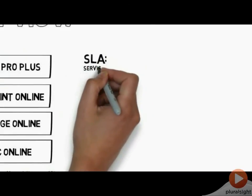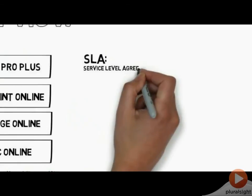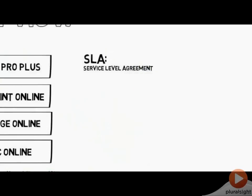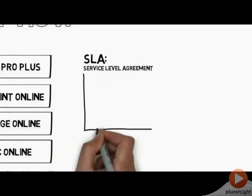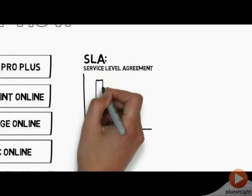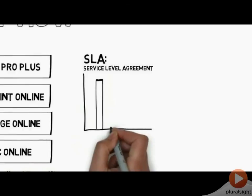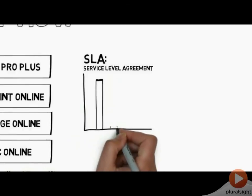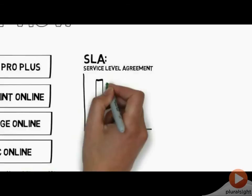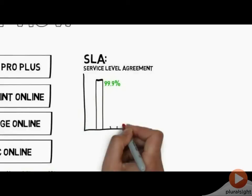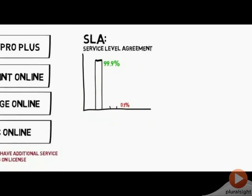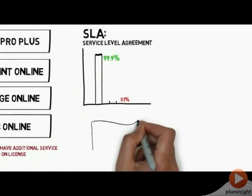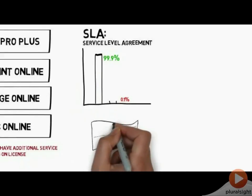Let's move on and go over the SLA — the service level agreement. The service level agreement dictates how the service is going to function and what our uptime is going to be. Microsoft has said for Office 365 they are going to have an uptime of 99.9%. That means there is a possibility of 0.1% of the time we will be down, so there is that possibility at all times.